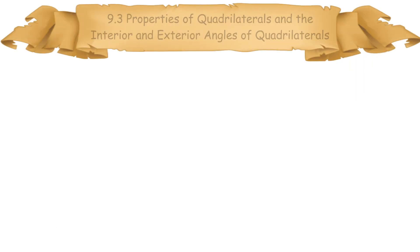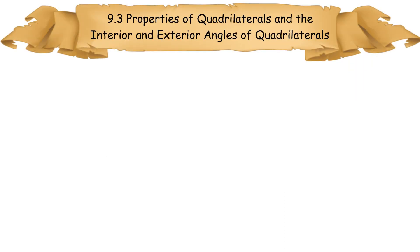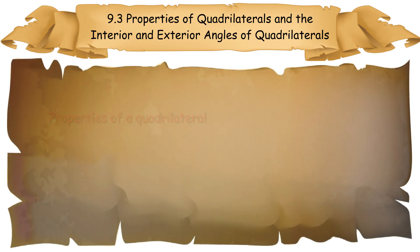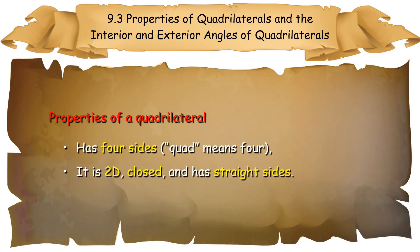9.3 Properties of Quadrilaterals and the interior and exterior angles of quadrilaterals. A quadrilateral has four sides — 'quad' means four. It is 2D, closed, and has straight sides.